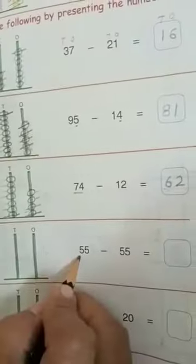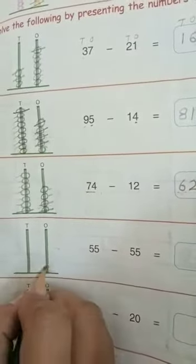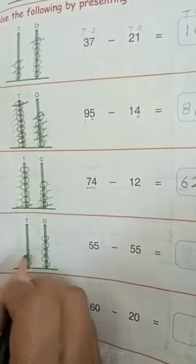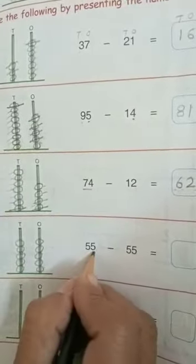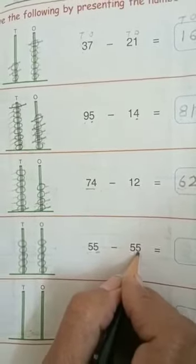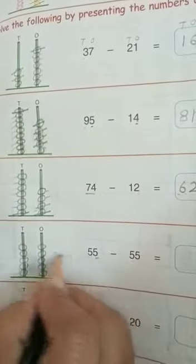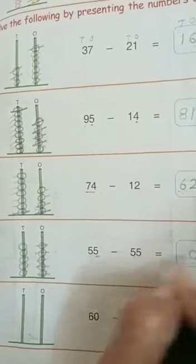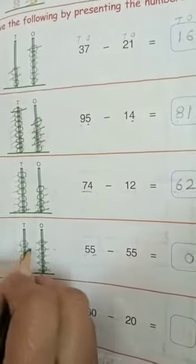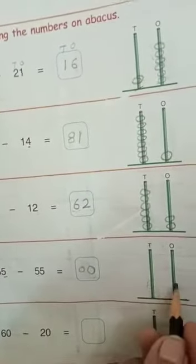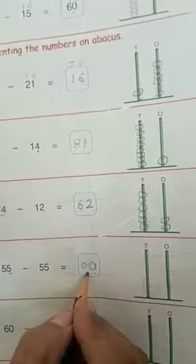Now next: 55 minus 55. Set up 55: 1, 2, 3, 4, 5 ones and 1, 2, 3, 4, 5 tens — that's 5 tens and 5 ones, which is 55. Now we have to take away 5 ones from 5 ones and 5 tens from 5 tens. The result is 0 and 0. So the answer is 0. We will not draw any beads on this abacus. The answer is 0.